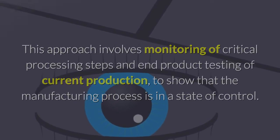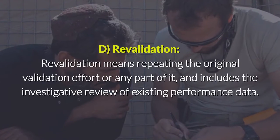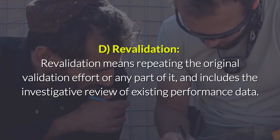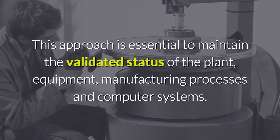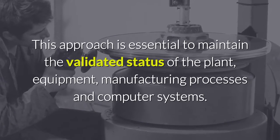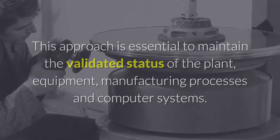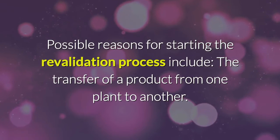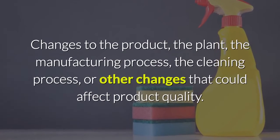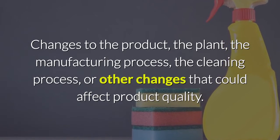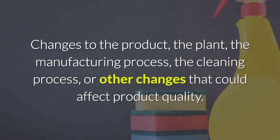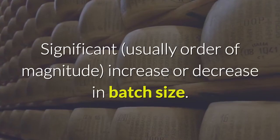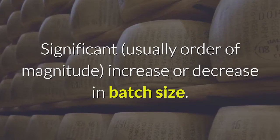Revalidation means repeating the original validation effort or any part of it, and includes the investigative review of existing performance data. This approach is essential to maintain the validated status of the plant, equipment, manufacturing processes, and computer systems. Possible reasons for starting the revalidation process include: transfer of a product from one plant to another, changes to the product, plant, manufacturing process, cleaning process, or other changes that could affect product quality, the necessity of periodic checking of validation results, and a significant — usually order of magnitude — increase or decrease in batch size.